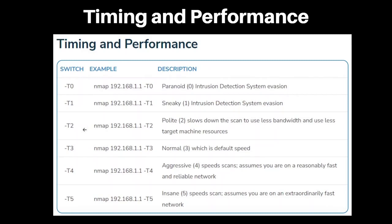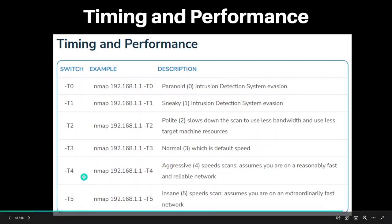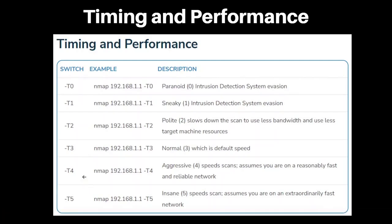T3 is the default timing option and is suitable for most scans. It balances speed and reliability and is a good option for most situations. T4 speeds up the scan and is suitable for reasonably fast and reliable networks. It is a good option for scans that need to be completed quickly.